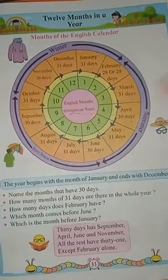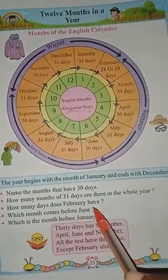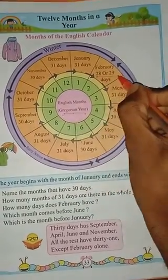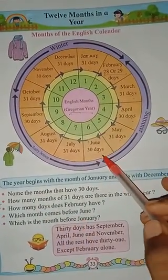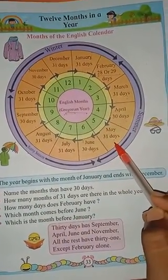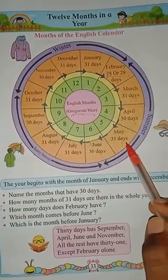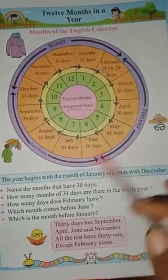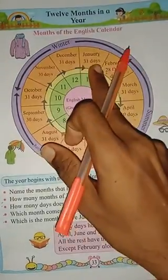How many days does February have? February has 28 or 29 days. Which month comes before June? It is May. Which month comes before January? That is December.